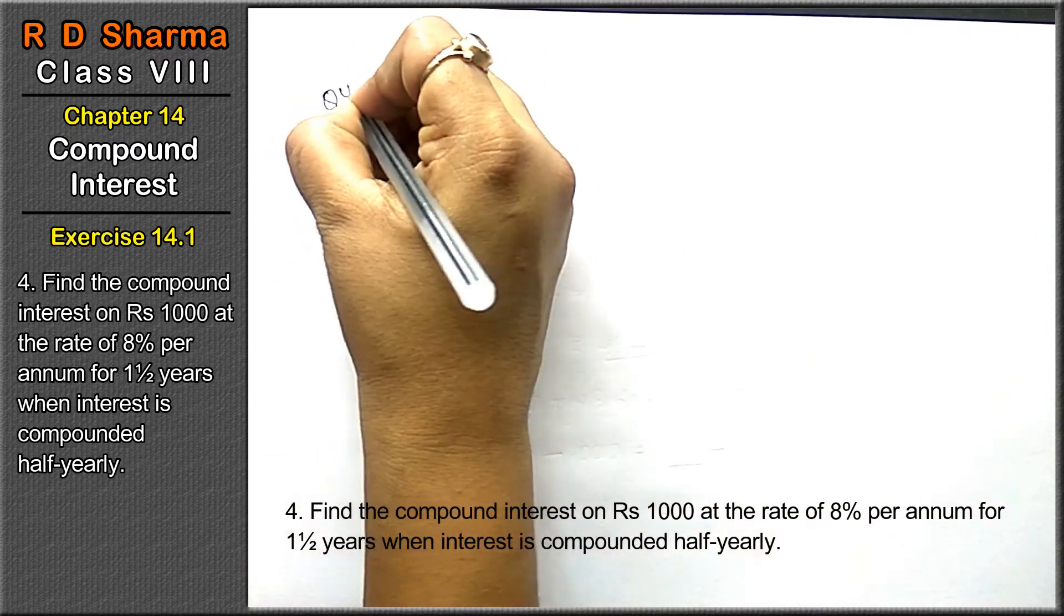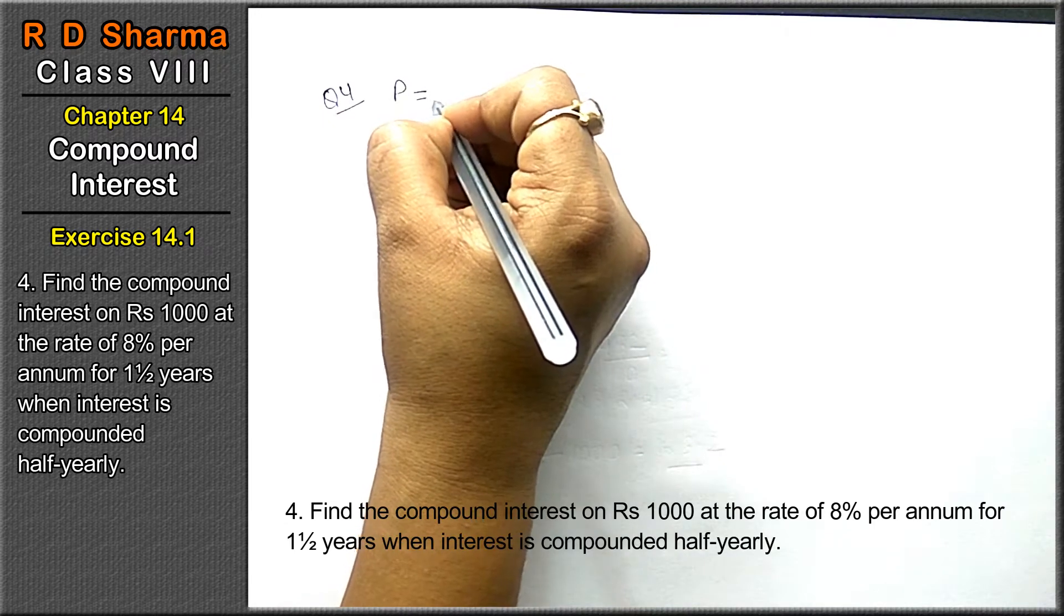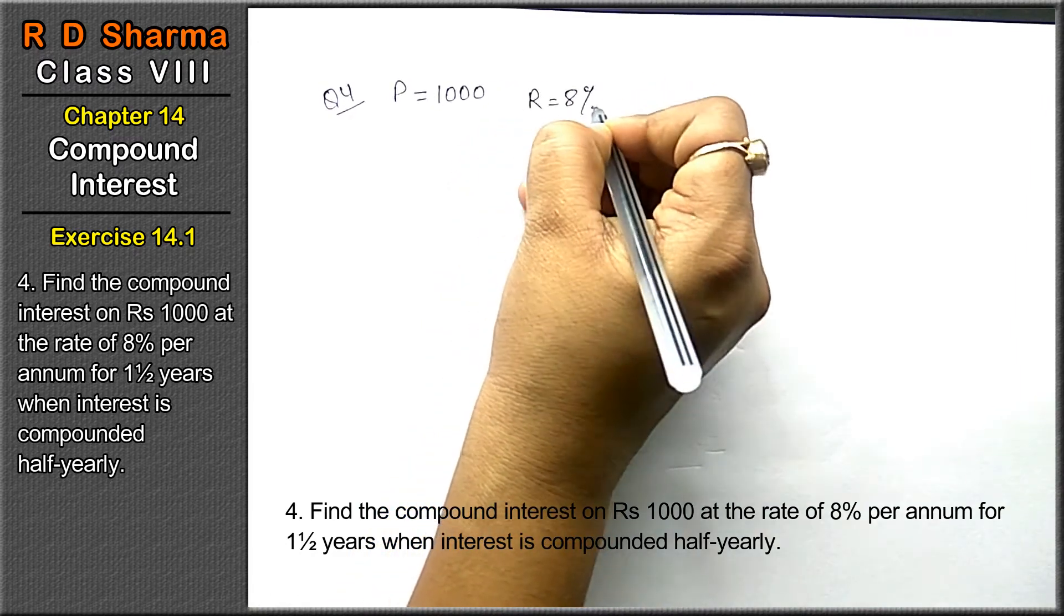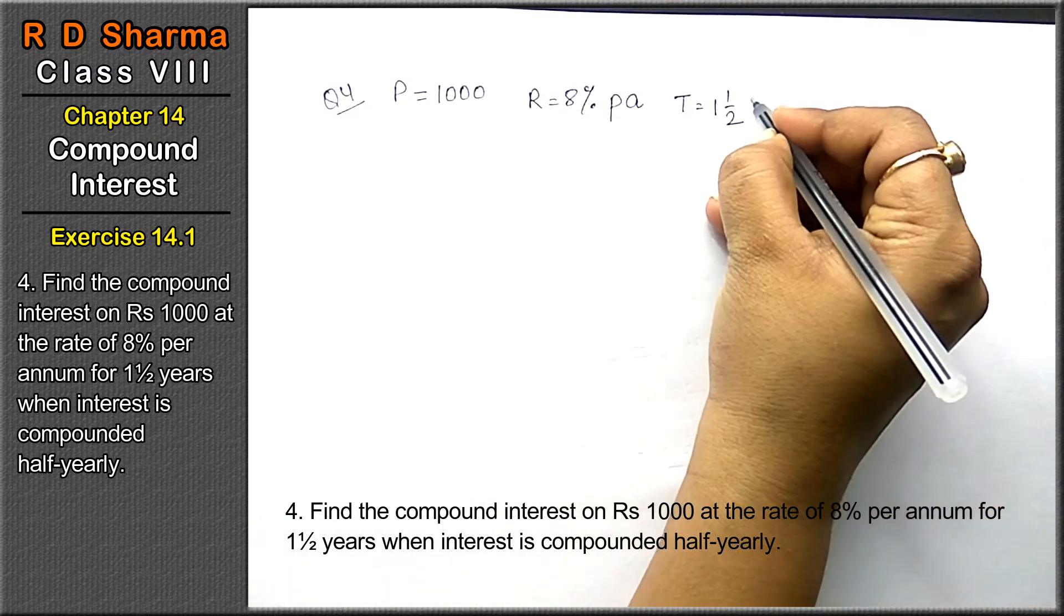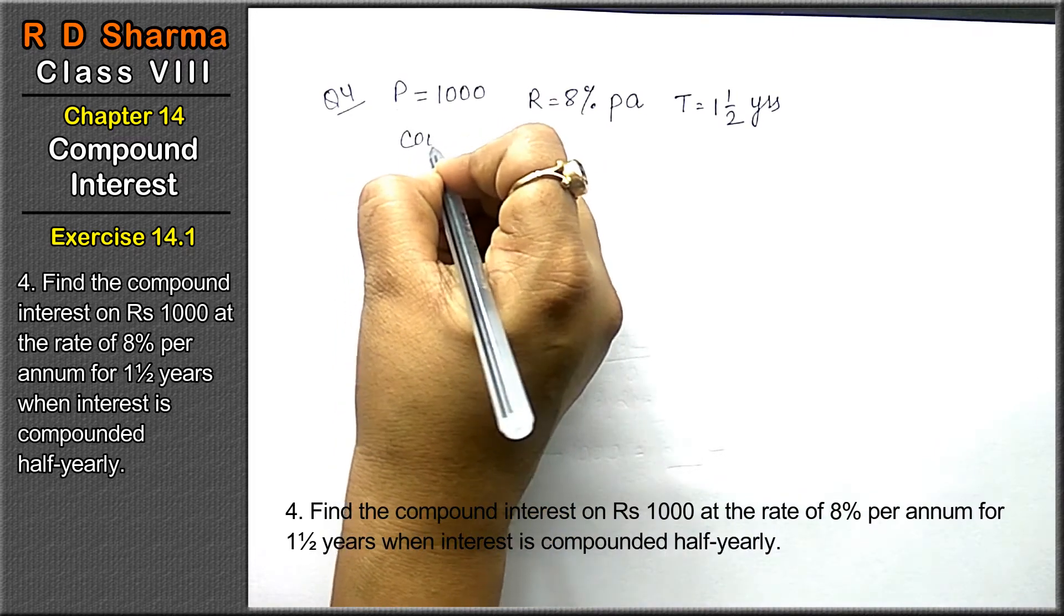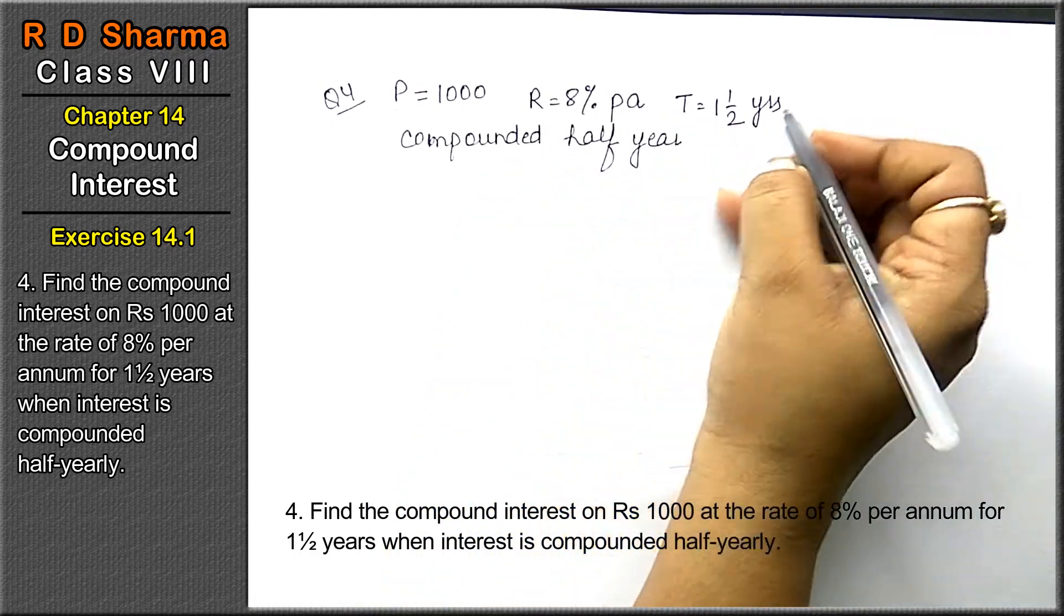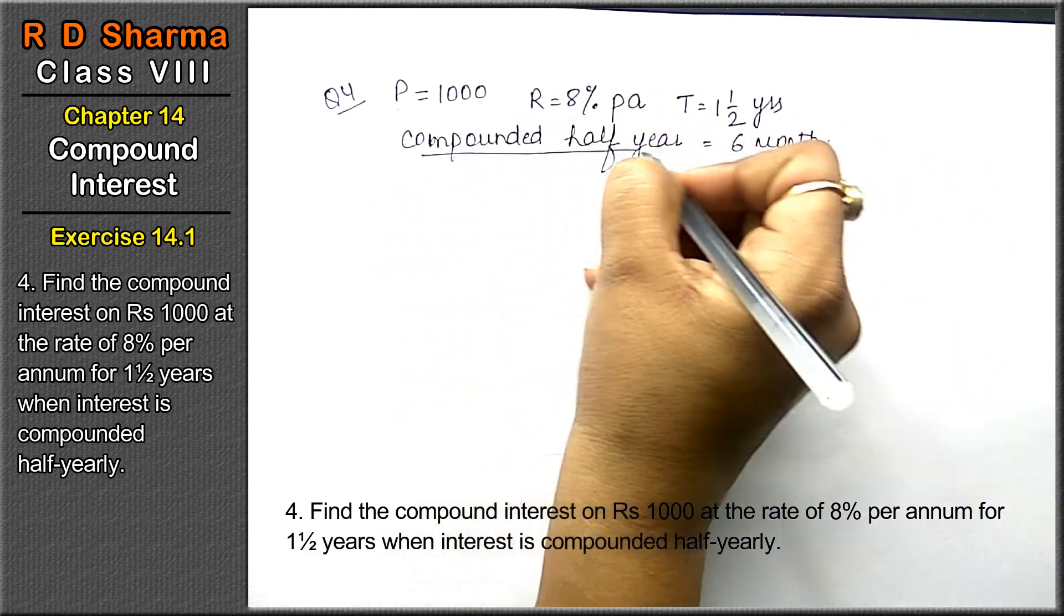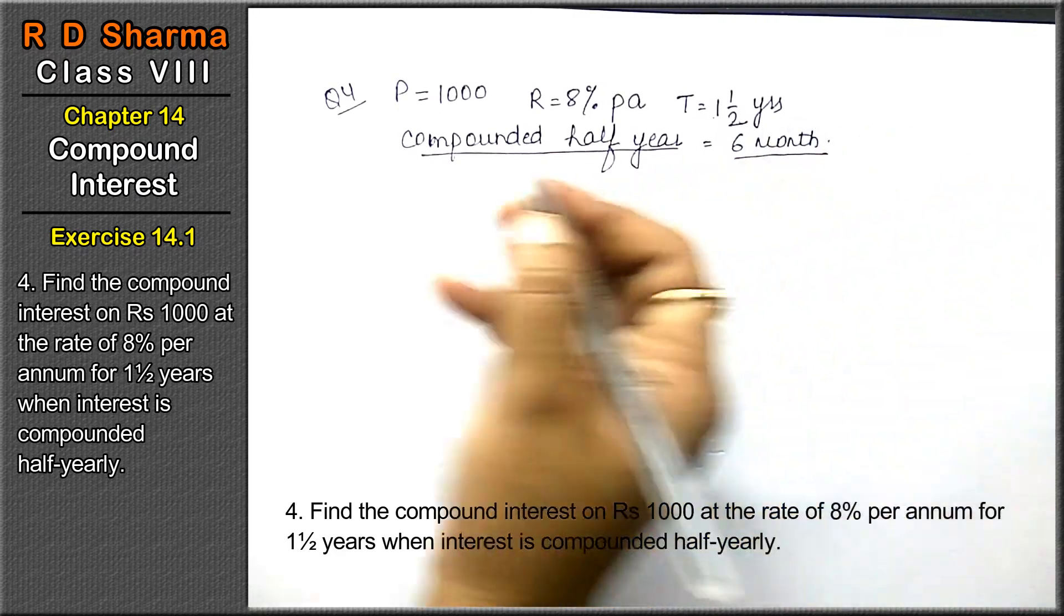Question number 4 is: Find the compound interest on Rs. 1000 at the rate of 8% per annum for 1 and half years when interest is compounded half yearly. If compounded half yearly is written, we need to calculate compound interest for 6 months periods. We'll cover the total time in 3 slots of 6 months each.